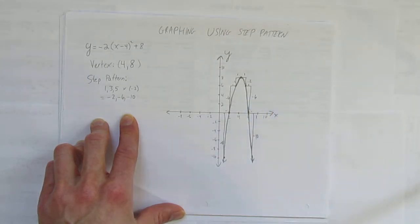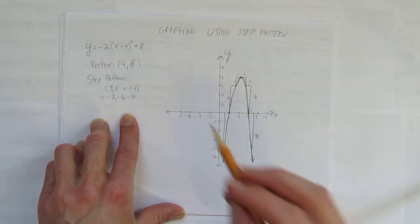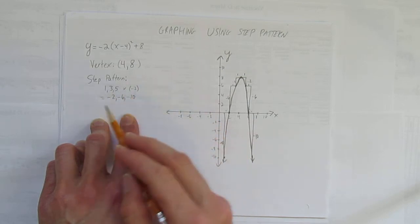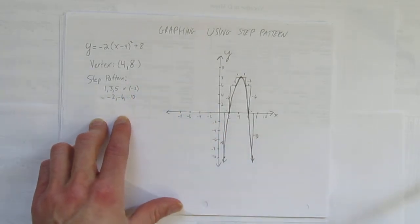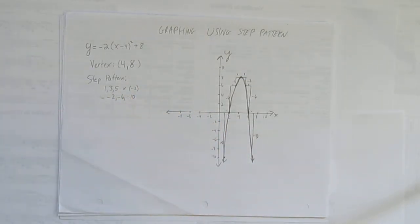And there you have it. I have graphed a nice parabola using this step pattern. The vertex was 4, 8. And I counted this step pattern off and showed my work right on the graph.